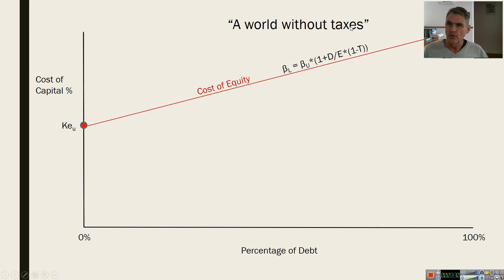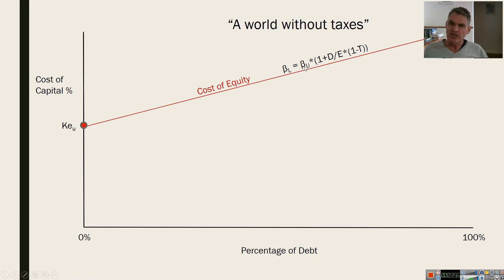This line is a straight line, and the equation which defines it looks like this. You will recognize the beta of the company here — this beta is the levered company beta, which is what you measure empirically when you actually calculate a beta from the stock market, because companies already have debt in them. But there is a relationship between what the company's beta would be without any debt — it'll be lower — and as you put in more and more debt, this equation defines this line. In a world without taxes, 1 minus 0 is just 1, so the levered beta equals the unlevered beta times 1 plus the debt-to-equity ratio.